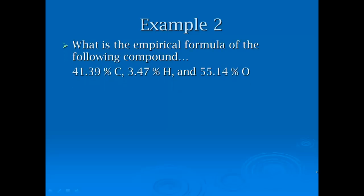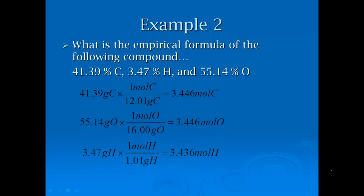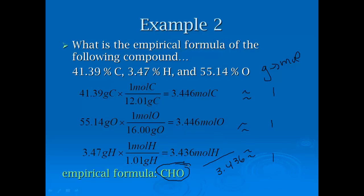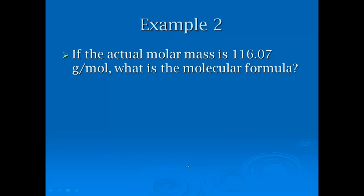For this one, they gave us percentage. What is the empirical formula of the following compound: 41.39% C, 3.47% H, and 55.14% O. Once they gave us percentages, the first step is to go grams to moles, which is what I did down here. If I divide by the smallest amount, which is divide all of them by 3.436, guess what? They all come out to be about one. The empirical formula is simply going to be CHO, one of each. Nothing too funky. If you get a whole number, go with it.